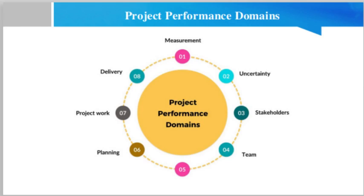The uncertainty performance domain addresses activities and functions associated with risk and uncertainty. Projects exist in environments with varying degrees of uncertainty. Uncertainty presents threats and opportunities that project teams explore, assess, and then decide how to handle. In the broadest sense, uncertainty is a state of not knowing or unpredictability. There are many facets to uncertainty, such as risk associated with not knowing future events, ambiguity associated with not being aware of current or future conditions, and complexity associated with dynamic systems with unpredictable outcomes.